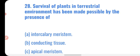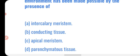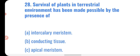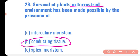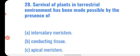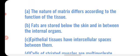Next question: survival of plants in a terrestrial environment has been made possible by the presence of — intercalary meristem, conducting tissue, apical meristem, or parenchymatous tissue? Terrestrial plants survive because of conducting tissue — phloem and xylem — which transport water, minerals, and food throughout the plant's body. Correct option: conducting tissue.